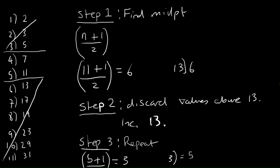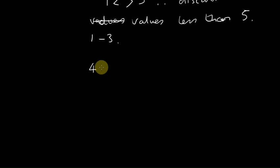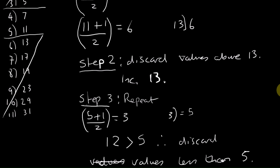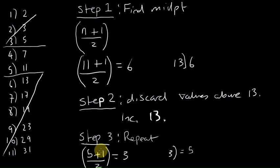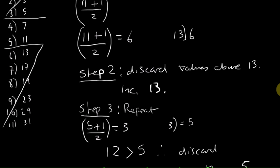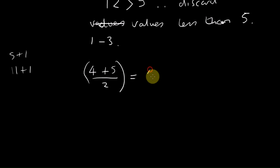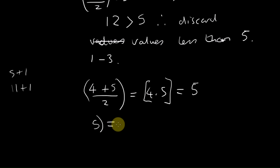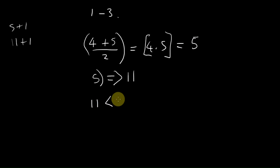We've got positions 4 and 5 left. You might notice that using the formula with just these two values gives us 4 plus 5 divided by 2, which is 4.5 — we round up to 5. Position 5 represents the value 11. Now we know that 11 is less than 12.